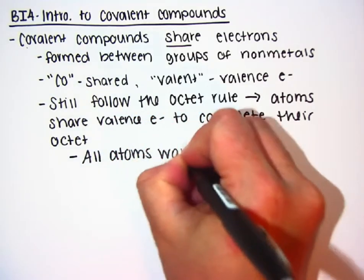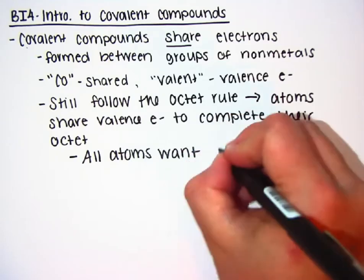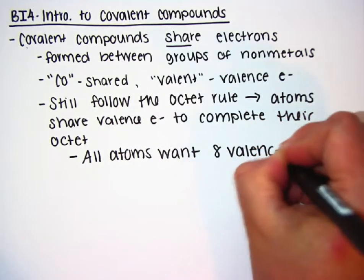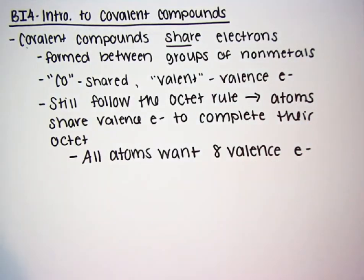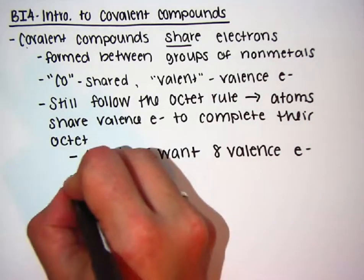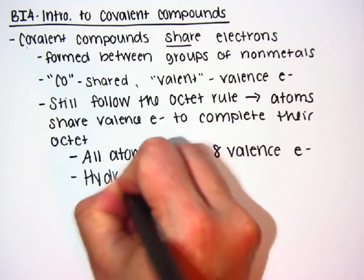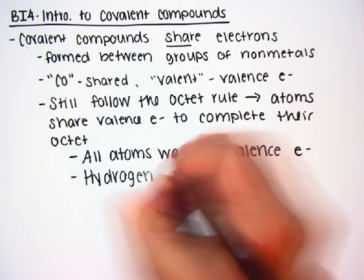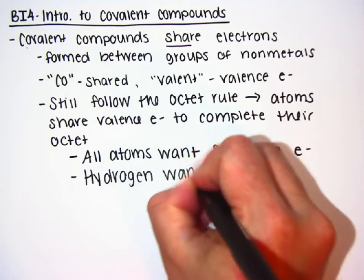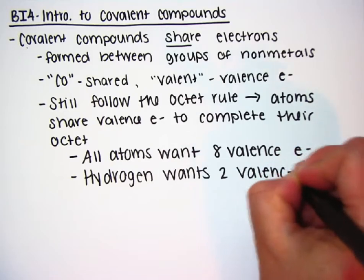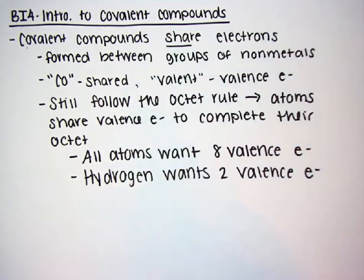Quick refresher of the octet rule: all atoms want eight valence electrons. But hydrogen is going to be an exception — hydrogen is happy with only two electrons. Hydrogen only has an s orbital, and we fill that one s orbital with its two electrons, so its outermost energy level is still full.